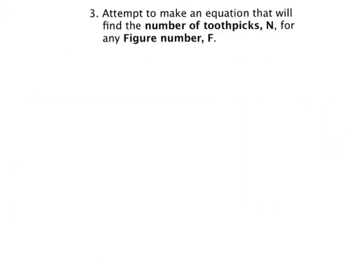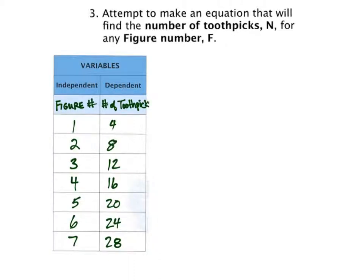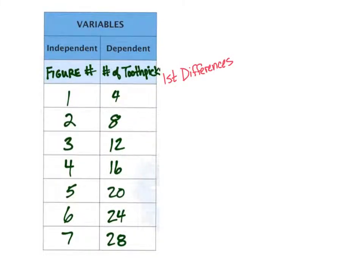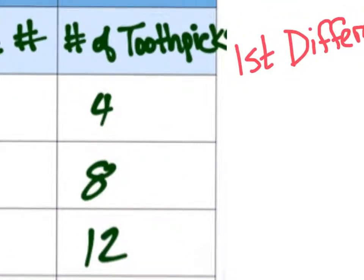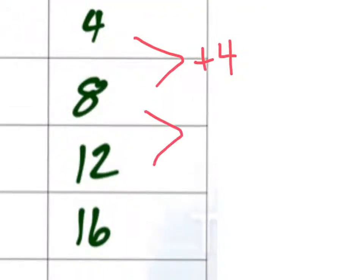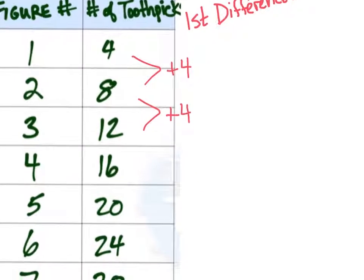Question number three asks us to create an algebraic equation that will relate the number of toothpicks for any figure number. I typically look at the table, however you can do this from the graph or even just from using logic. I like to look and pick out the pattern in the table. So we find the first differences. The first differences focus on looking at your y values, in this case the number of toothpicks, and seeing what the pattern is. If we look at four and eight it goes up by four, and we can continue this pattern on. It goes up by four each and every time in this table.